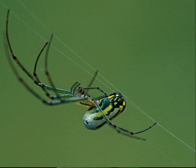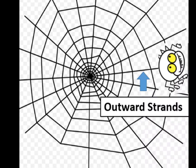When this thread eventually sticks to an object on the other side, the spider tightens and strengthens the strand and then makes it the foundational strand for the overall web.